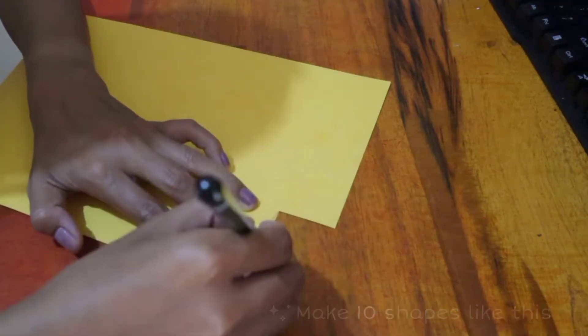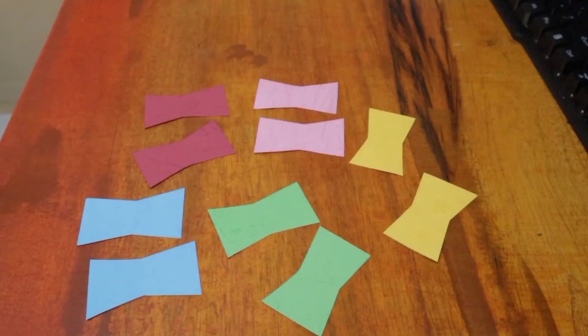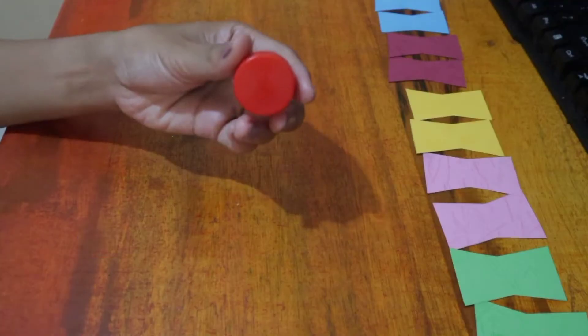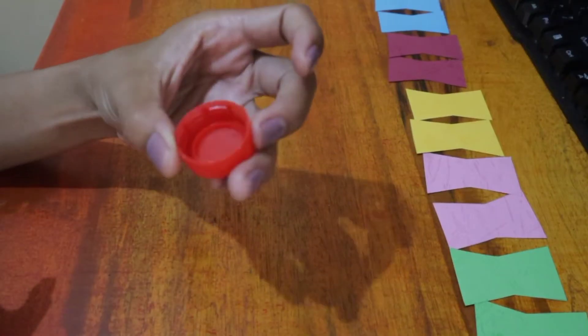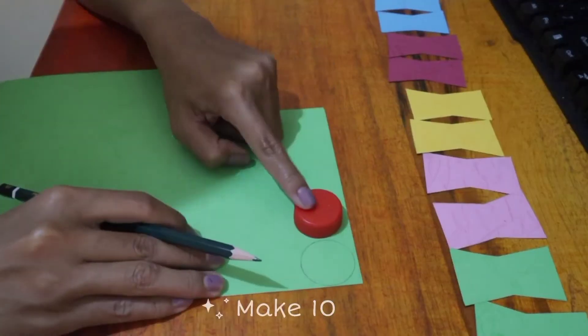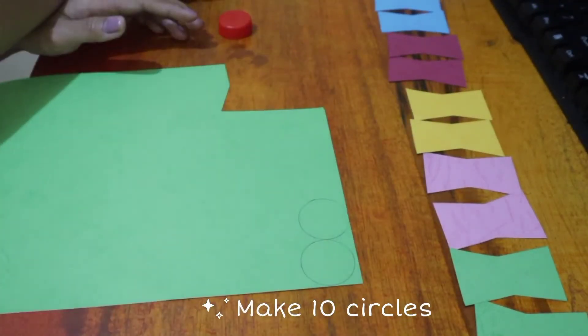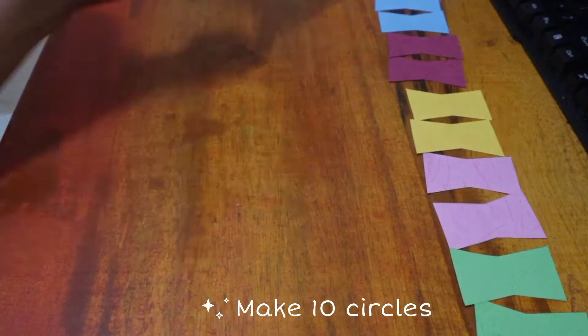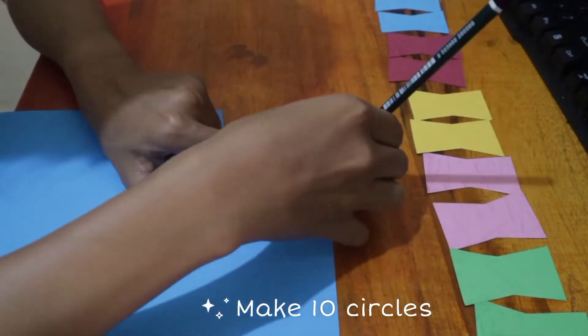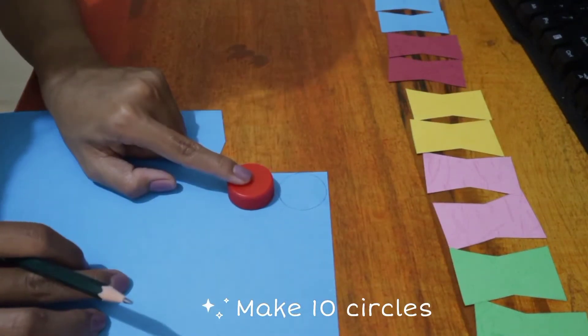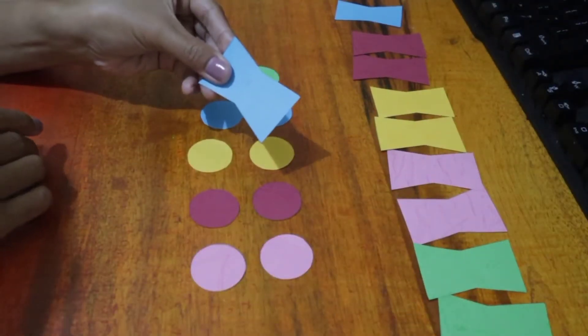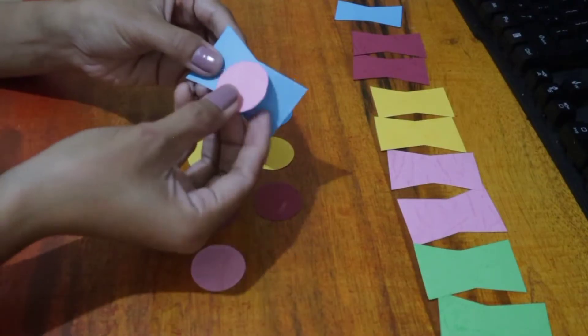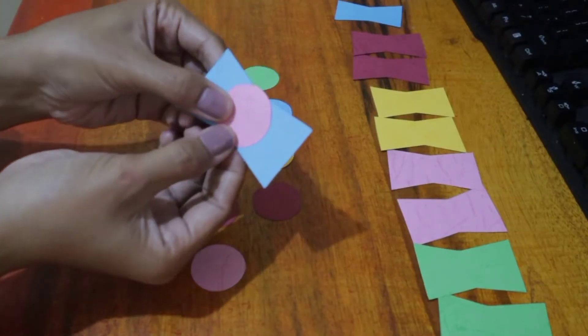And if you have done, now we're going to make ten circles and I'm going to use this bottle cap to help me drawing or make the circles. Okay, now we're going to stick each circle with the shapes that we have made.